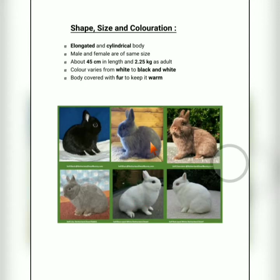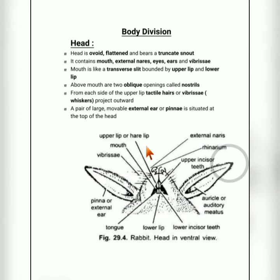Normally the color varies from white to black and white shades. You can see black, white, ash, gray or brown colored rabbits. The body is normally covered with fur, which helps to keep it warm.